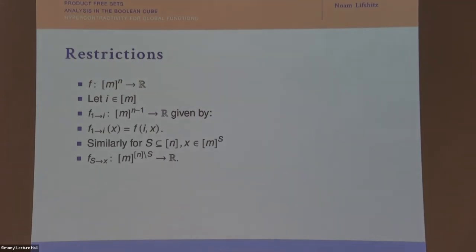For unstructured small sets — sets that don't look like dictators — we can still get hypercontractivity.